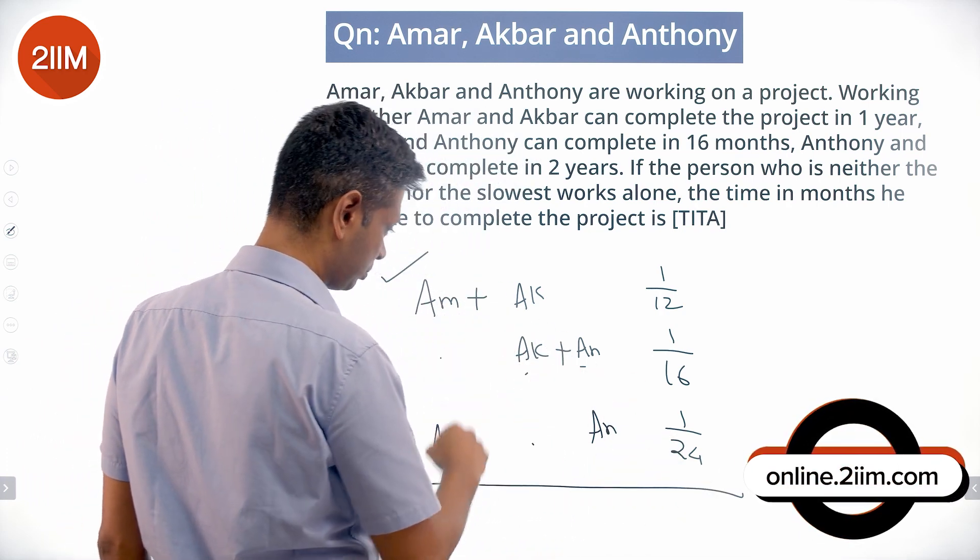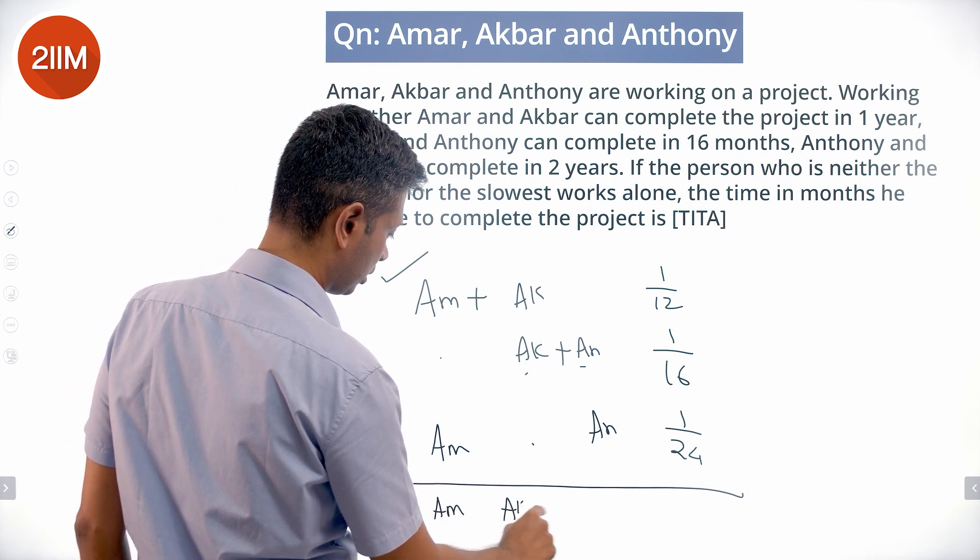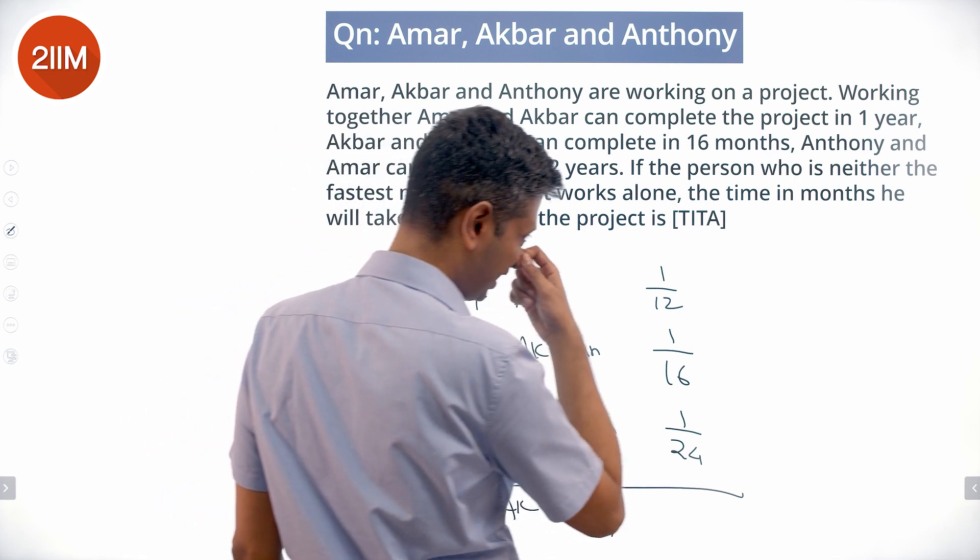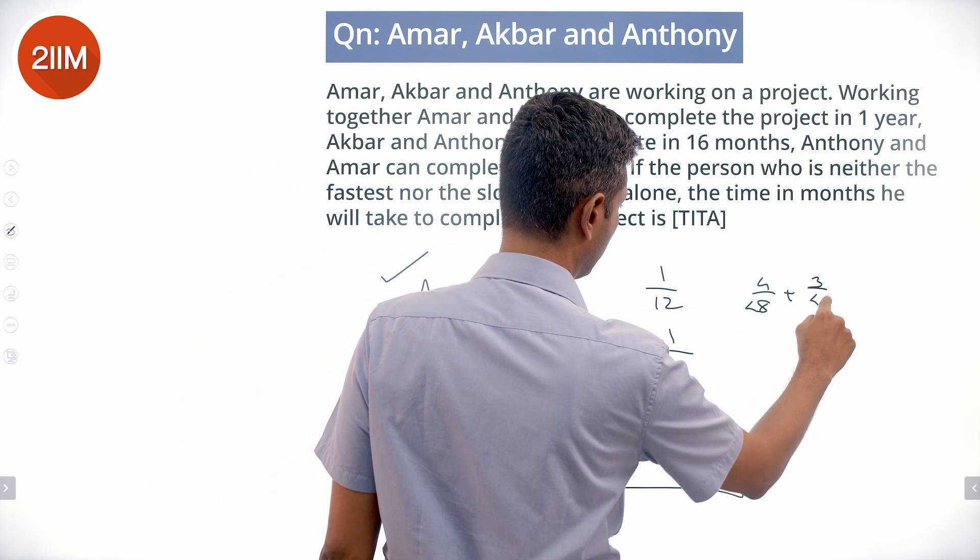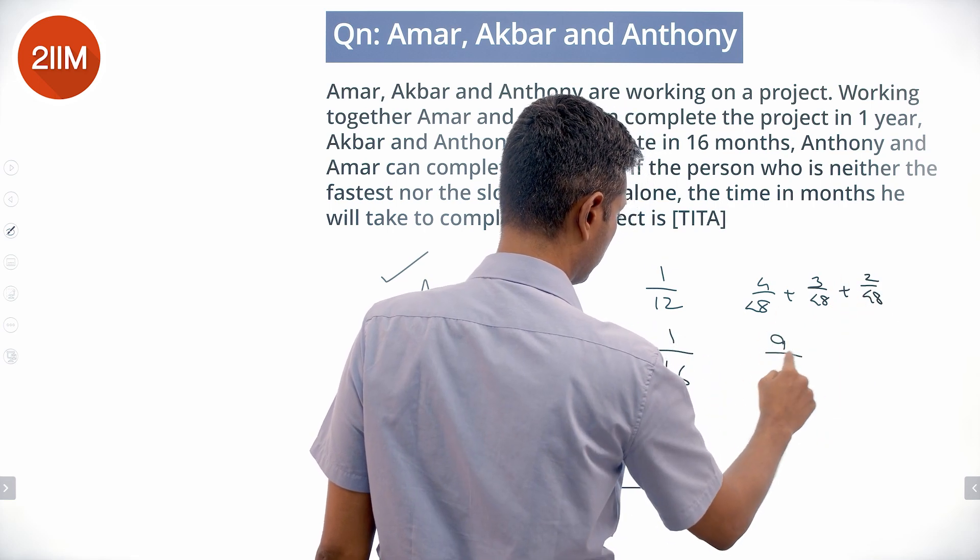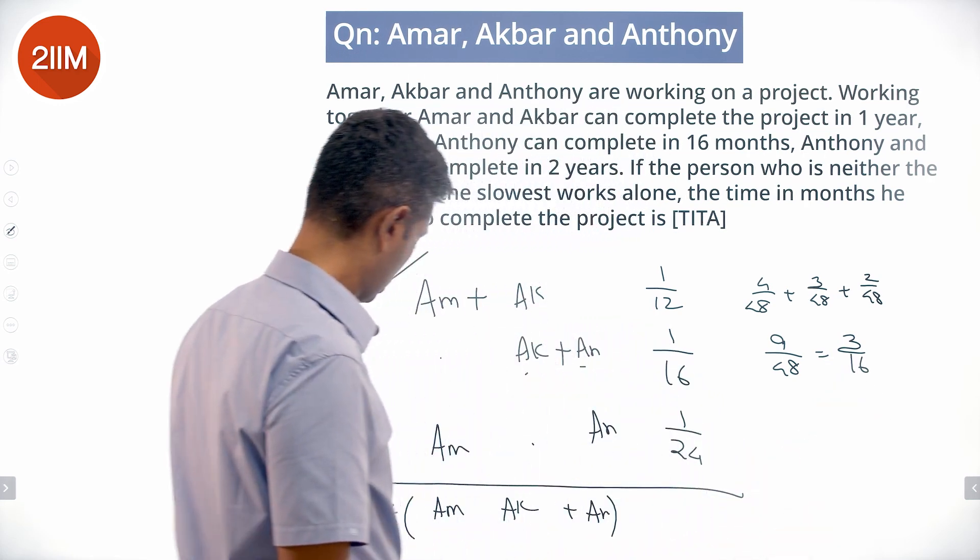Add all three up: 2 times (Amar + Akbar + Anthony). The LCM is 48: 4/48 plus 3/48 plus 2/48 equals 9/48, which is 3/16. That's twice the sum of all three.